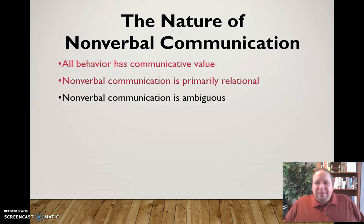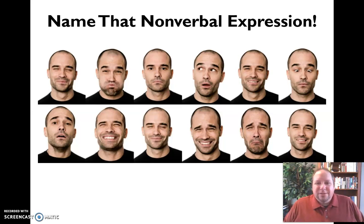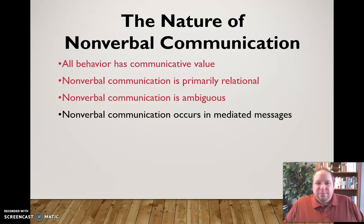Nonverbal communication is ambiguous — it can be interpreted in a variety of different ways. For example, a gentleman making a variety of facial expressions: what's he trying to express with each of these? Well, some of them are fairly straightforward, but others are kind of confusing and could mean a variety of things. We don't know based just on his nonverbal expression exactly what he means. That's because nonverbal communication is ambiguous by nature — not as clear as verbal communication, which can also be ambiguous, but certainly nonverbal expression is much more ambiguous.